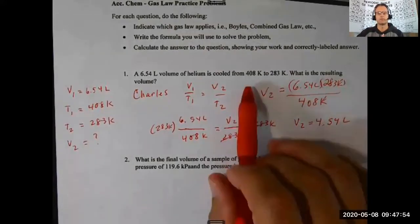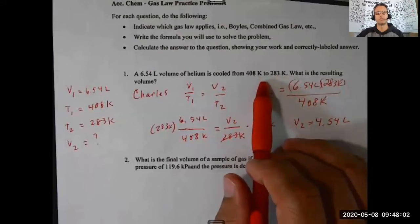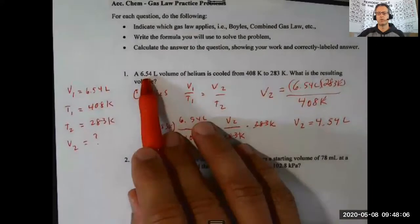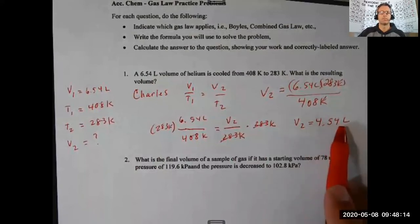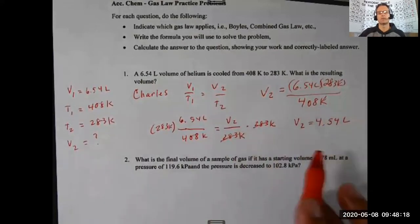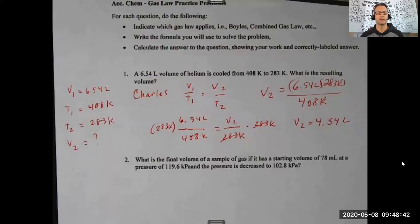We started at 6.54 liters and ended at 4.54 liters, so that makes sense. If the temperature went down but your volume came out higher — say 12 liters — you did something wrong and need to recheck your math. This kind of logic check works for Boyle's law, Charles's law, Avogadro's law, and Gay-Lussac's law. For example, Boyle's law is an inverse relationship, so if you increase pressure, you'd expect volume to decrease.